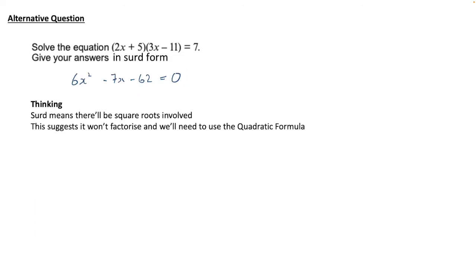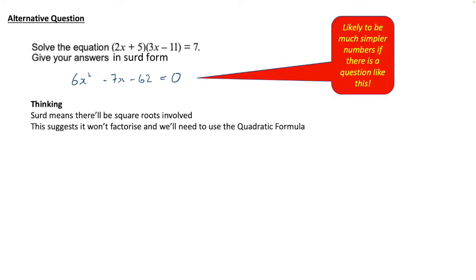Now, there's a bit of extra stuff on the video not to do with this actual question. So we're looking at an alternative question and this could be asked, instead of give your answers to two decimal places, they could say give your answers in surd form. Now in fact it's likely to be much simpler numbers if they do ask you this sort of question but we'll have a look seeing as we've been thinking about this quadratic. And the thinking on this one is that because it says surd then there will be square roots involved and that in itself suggests it probably won't factorise and we'll need to use the quadratic formula.